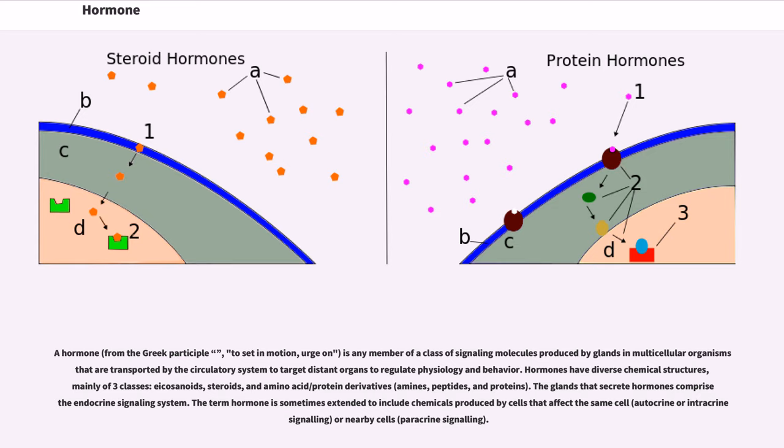The glands that secrete hormones comprise an endocrine signaling system. The term hormone is sometimes extended to include chemicals produced by cells that affect the same cell, autocrine or intracrine signaling, or nearby cells, paracrine signaling.